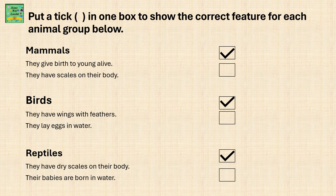Put a tick in one box to show the correct feature for each animal group below. Mammals: they give birth to young alive — that is true, so there is a tick. They have scales on their body — that is not true. Birds: they have wings with feathers — true, so there is a tick. They lay eggs in water — birds do not lay eggs in water, so there is no tick.